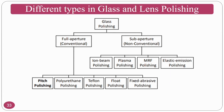For glass and lens polishing there are full aperture conventional methods and sub-aperture non-conventional methods. Conventional methods include pitch polishing, polyurethane polishing, Teflon polishing, float polishing, and fixed abrasive polishing. Non-conventional methods include ion beam polishing, plasma polishing, MRF polishing, and elastic emission polishing.